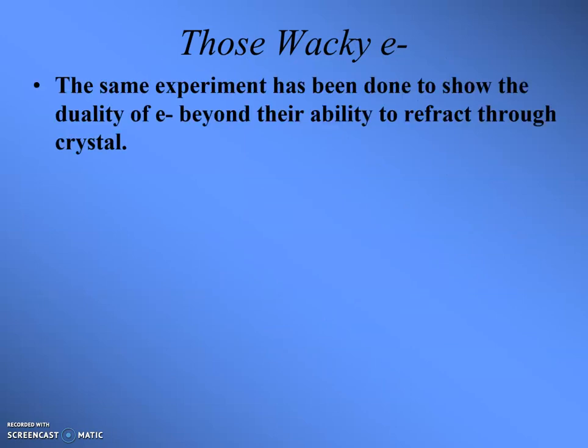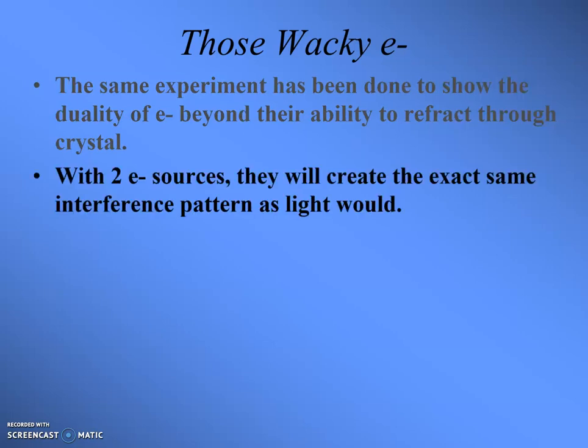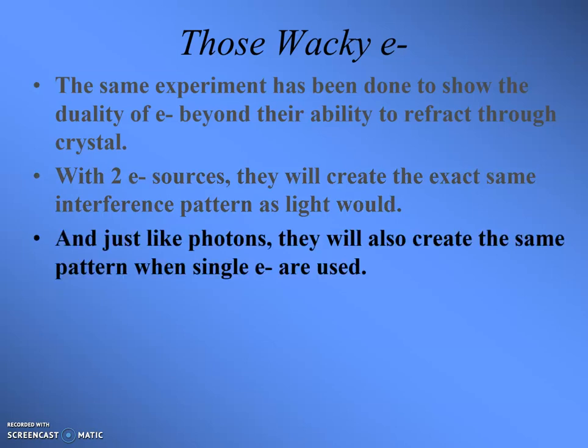Let's go back to those electrons. The same experiment has been done to show the duality of electrons beyond their ability to refract through crystals. They showed that electrons actually travel as a wave because they did Snell's Law with electrons in crystal. You can do the Young's experiment with electrons and they will also make an interference pattern. With two electron sources you get the exact same interference pattern that light does, which once again shows everything travels as waves. And just like photons, you will create the exact same pattern with single electrons — again, this doesn't make any sense when you're sending single electrons through the openings.